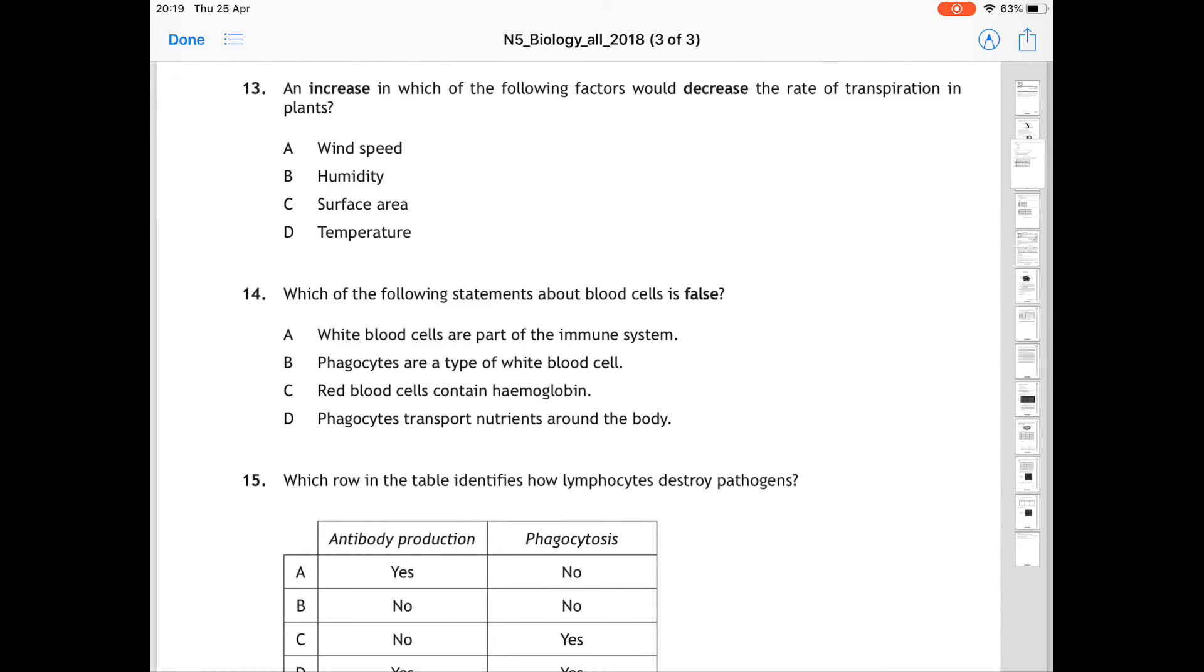Question 13 is referring to rate of transpiration and how wind speed, humidity, surface area, and temperature affect it. An increase in which of the following factors would decrease the rate of transpiration in plants? So the correct answer for 13 is B, because an increase in humidity decreases the rate of transpiration. Wind speed, surface area, and temperature, when they are increased, they also increase the rate. So B is the correct answer.